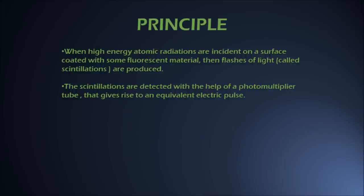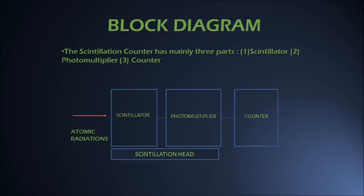Now let us come to the various major parts of a scintillation counter in the form of a block diagram. A scintillation counter mainly consists of three parts: number one, the scintillator; number two, the photomultiplier tube; and number three, the counter. The scintillator and photomultiplier tube can be collectively known as the scintillation head.